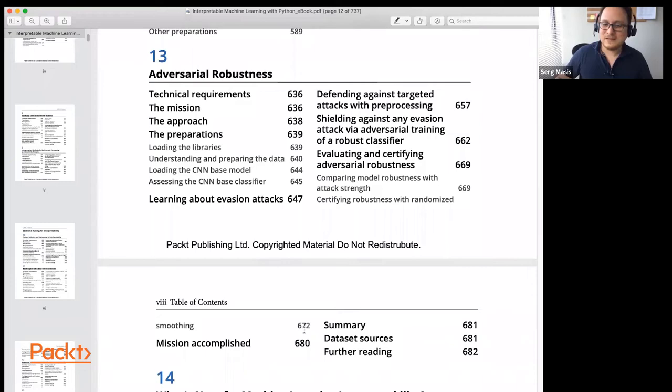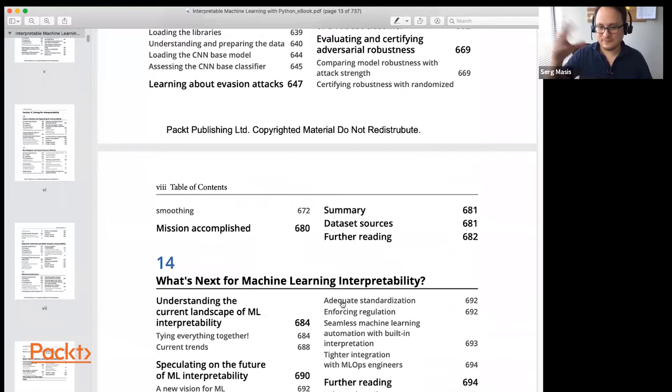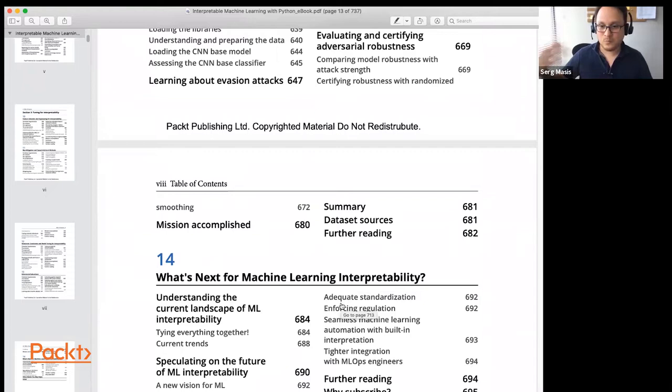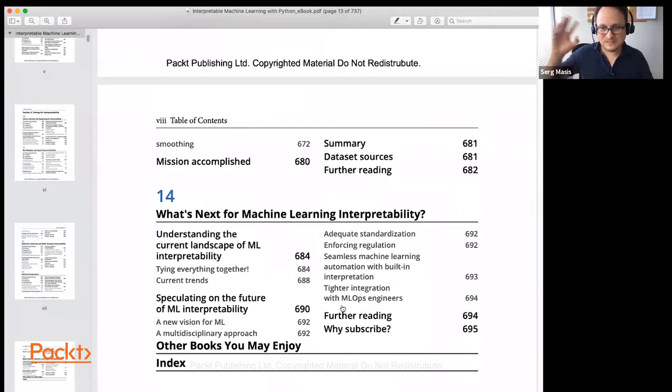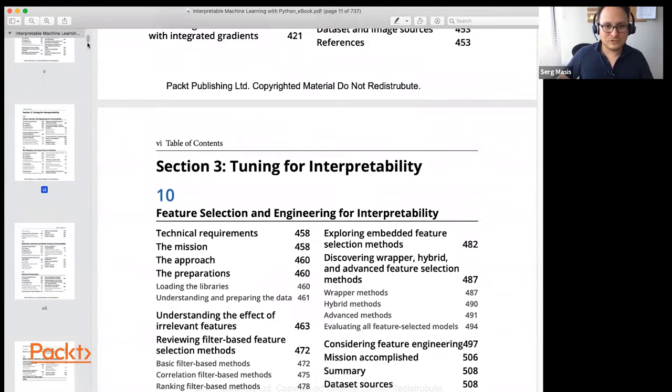The last chapter kind of gathers my thoughts as far as the book goes, what was learned, it kind of wrapped things up and then, what's next, how does interpretation and interpretability kind of connect to everything else that's going to go on moving forward in machine learning. So it kind of explains what's the vision for the future of machine learning.